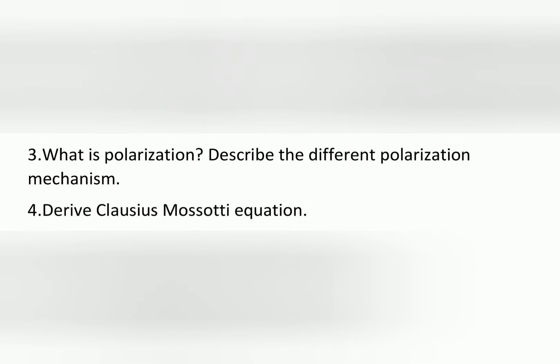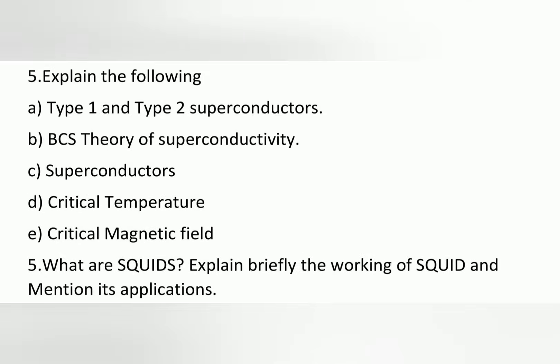The third question is: what is polarization, describe the different polarization mechanisms. The fourth question is: derive the Clausius-Mossotti equation. The fifth question is: explain the following — type 1 and type 2 superconductors, BCS theory of superconductivity, superconductors, critical temperature and critical magnetic field.